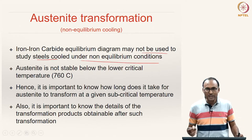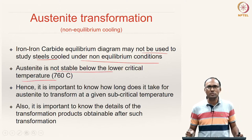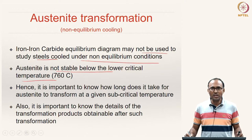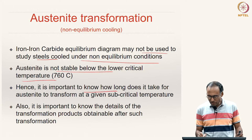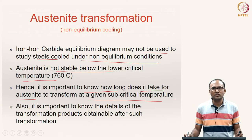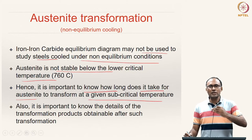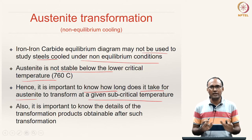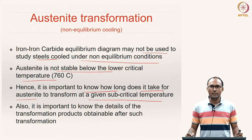Austenite in plain carbon steels is not stable below the lower critical temperature, which is about 760°C. When you are cooling down at a faster rate, you need to know how much time it takes — specifically, how long it takes for austenite to transform at a given subcritical temperature. For example, if you cool to 500°C, how long does it take for austenite to transform to its product phase?